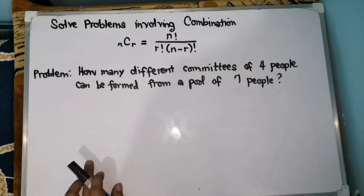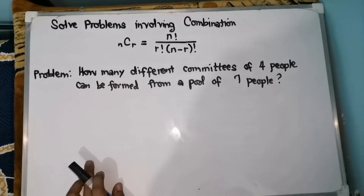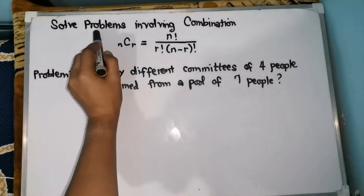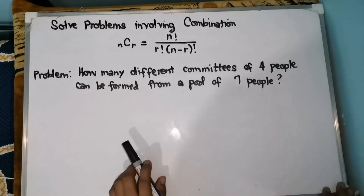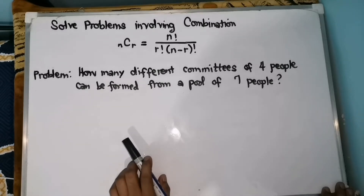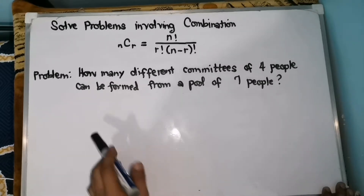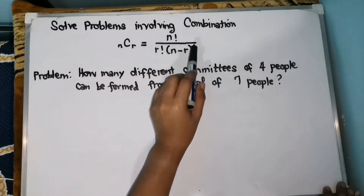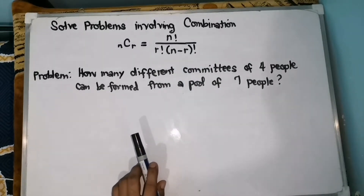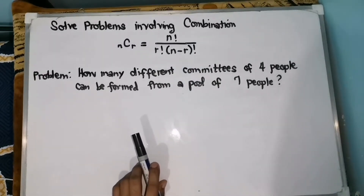The last video I uploaded was about evaluating combinations. So today, we are going to solve problems involving combination — that is, a combination of n objects taken R at a time. Remember that when the order is not significant, that falls under combination. The formula we are going to use is: combination of n objects taken R at a time equals n factorial over R factorial times the quantity n minus R factorial.